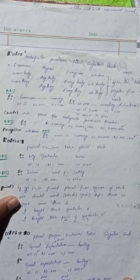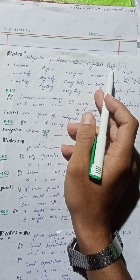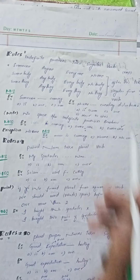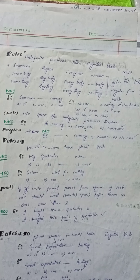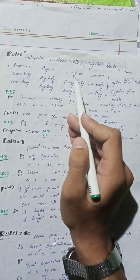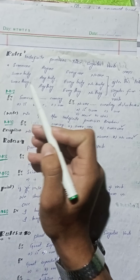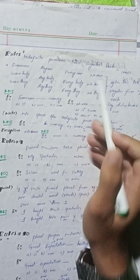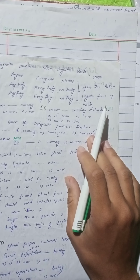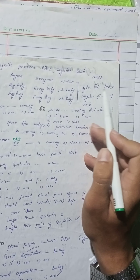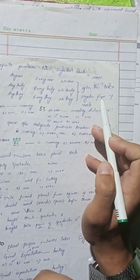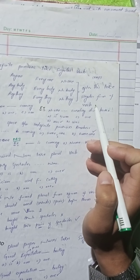Rule number eight: Indefinite pronouns take singular verb. Indefinite pronouns وہ ہوتے ہیں جو indefinite person، place یا thing کو describe کریں: someone, anyone, everyone, no one — اور ان کی forms: somebody, something, anybody, anything, everybody, everything, nobody, nothing. ان تمام indefinite pronouns کے بعد ہمیشہ singular form of verb use کرنا ہے۔ Example: 'Someone ___ coming' — right answer: 'is'. 'Someone is coming.'